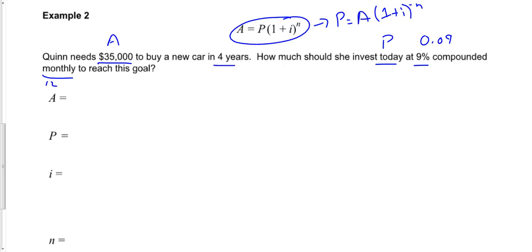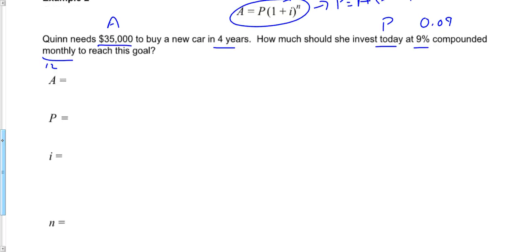So let's start filling in the information that we've got. So I know that my future value needs to be $35,000. I don't know what my present value is. That's what I'm looking for. My interest rate, my R is going to be 0.09, and it's being compounded monthly, so I divide that. So each compounding period per year,